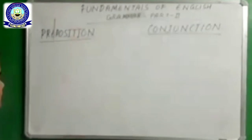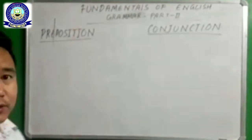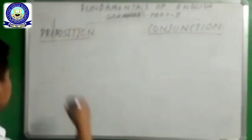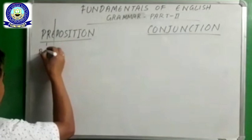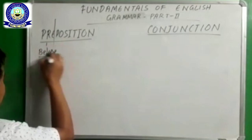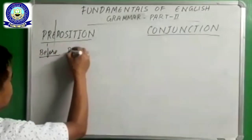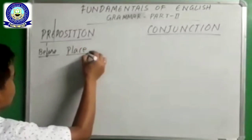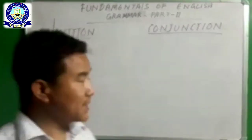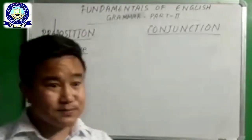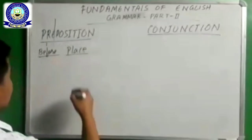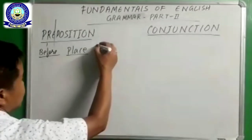So, preposition. If you see this word — preposition — pre means before, and position means place. So where is the place? They are placed before — before what? Before noun and pronoun in a sentence.